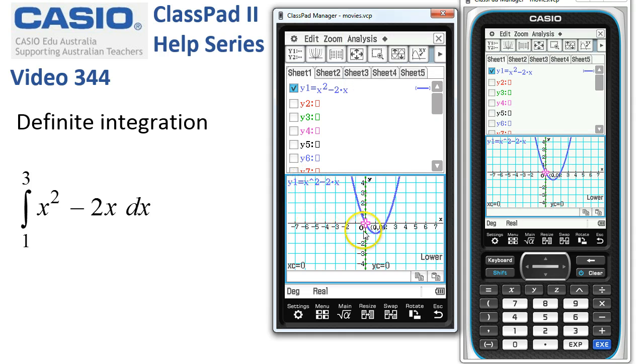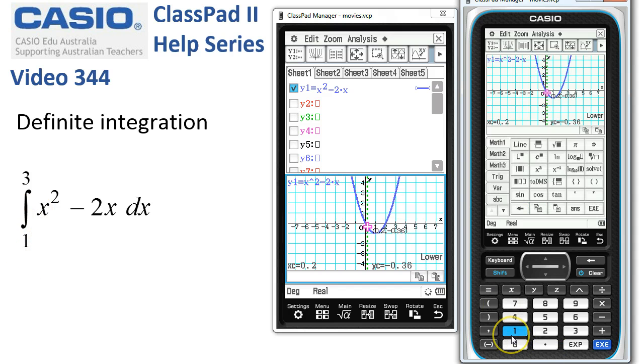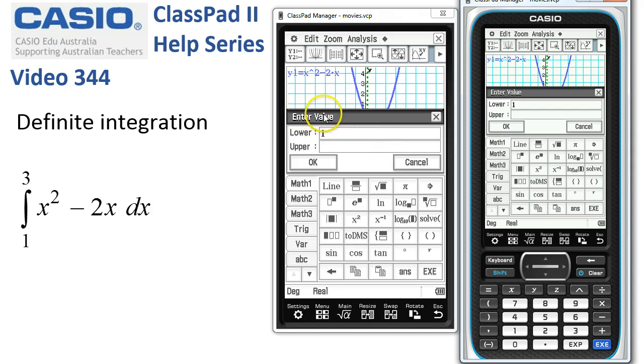ClassPad's waiting for us to tell it where the lower bound of our integral is. The quickest way, rather than using trace and locking it in with execute, is simply to tap the coordinates. Our lower bound is 1, so we'll just hit the 1 button here. We then get these templates where the lower bound is 1. We set the upper as 3 and say OK.